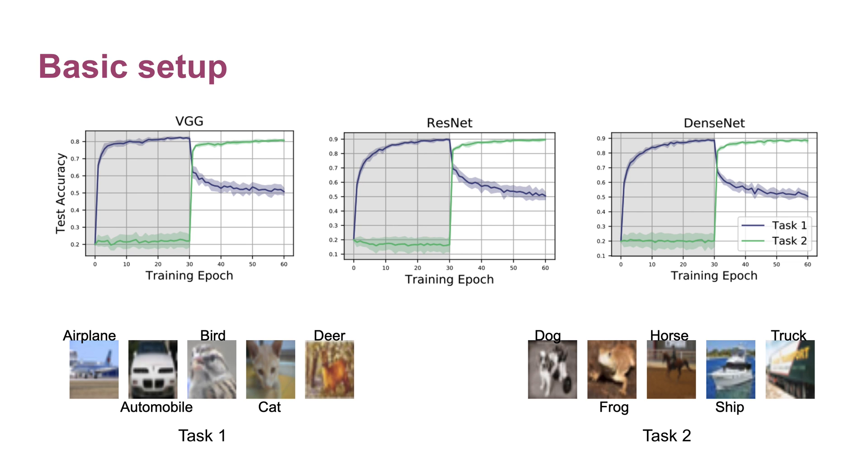Let's begin by taking a look at how network internal representations change during catastrophic forgetting. Here is one of the splits of CIFAR-10 that we use. We train on task one for 30 epochs and then switch to training on task two for 30 epochs, which causes quite a bit of forgetting in all three network architectures.